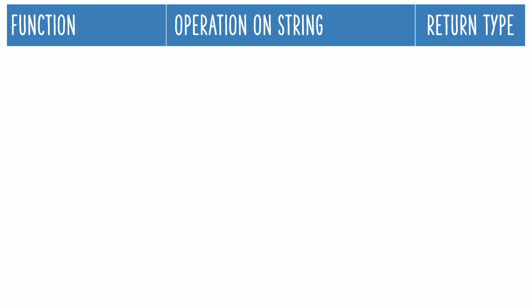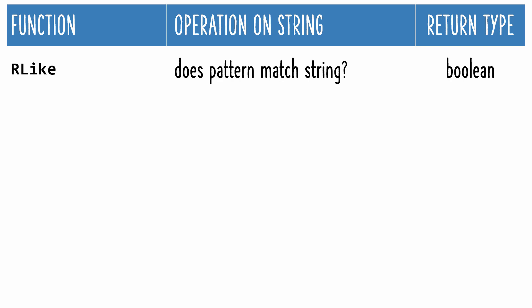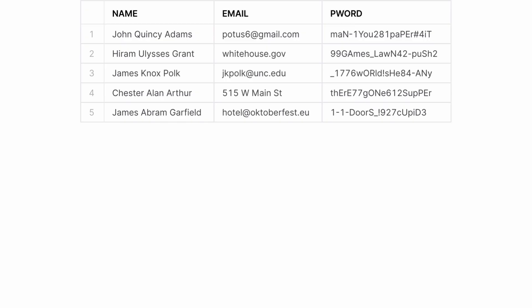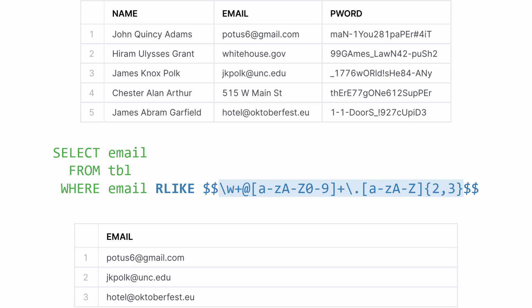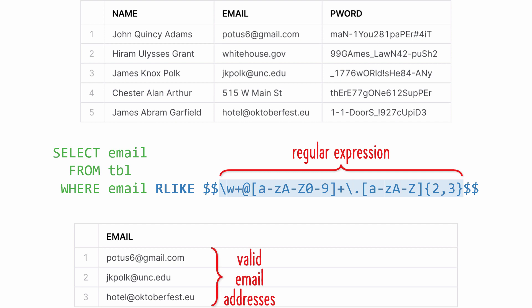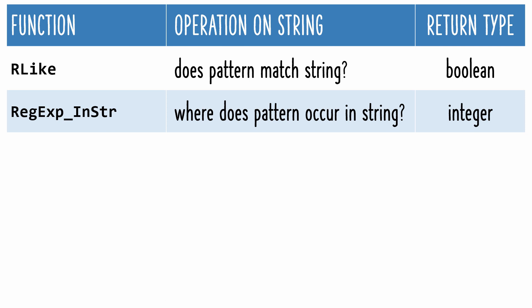Now let's look at how Snowflake implements regular expressions via six functions that use matching logic on columns containing string values. You use RLIKE to see if a pattern matches a string. I'll use this small Snowflake table to demonstrate the six functions. RLIKE is similar to SQL's LIKE operator, but it enables you to specify a more complex pattern via a regular expression. Here I asked for the column values that match a valid email address pattern. This is the one function where a pattern always represents an entire string. For the other five functions, a pattern can match a subset of a string. The instring function will give you the position inside a string where a pattern begins.